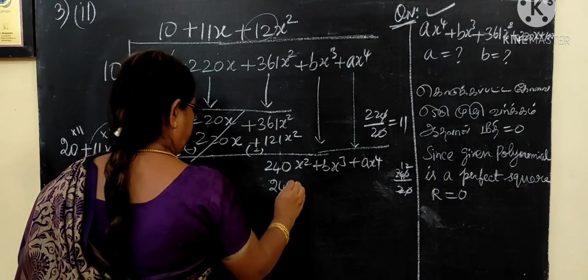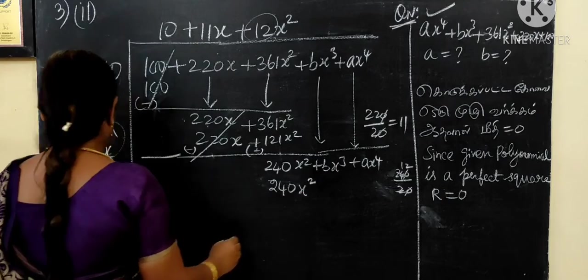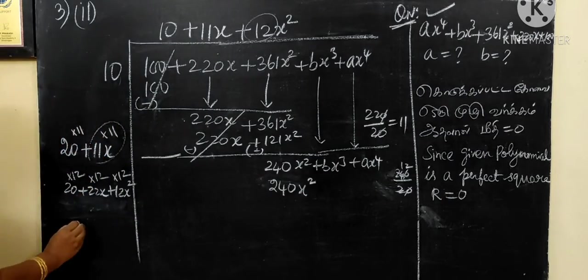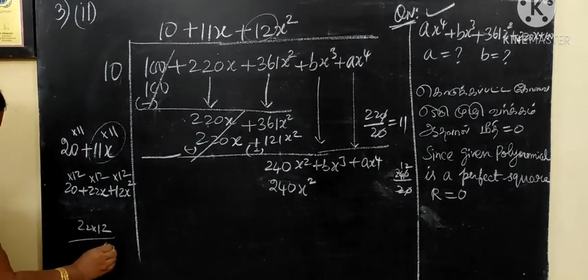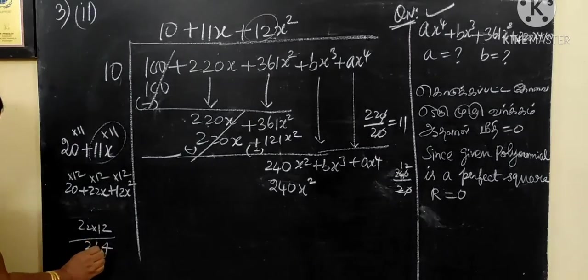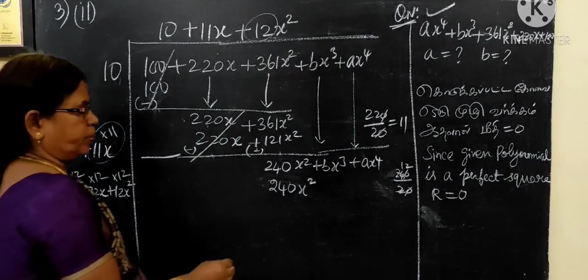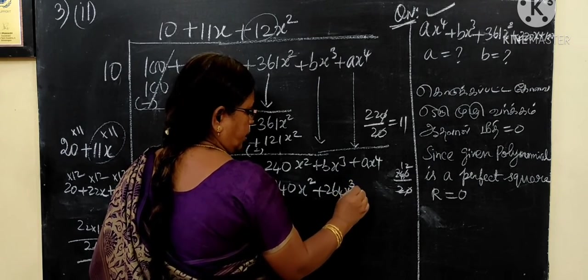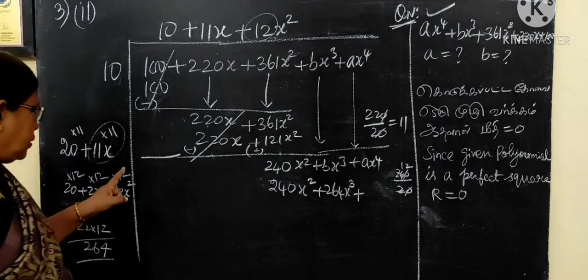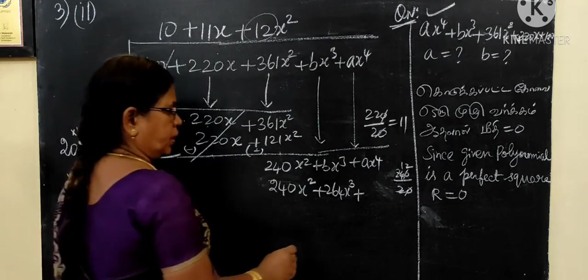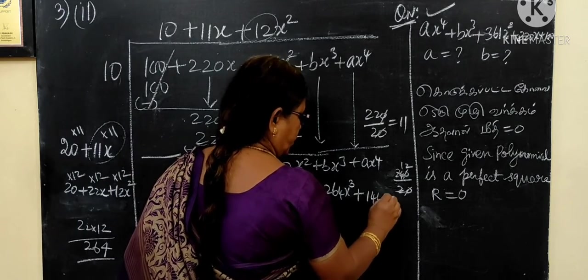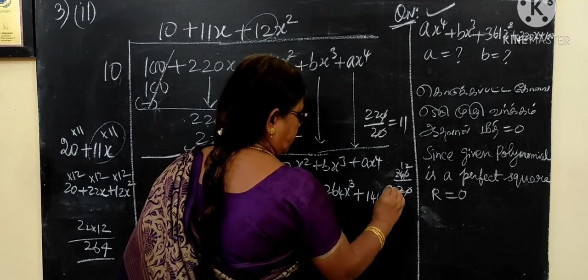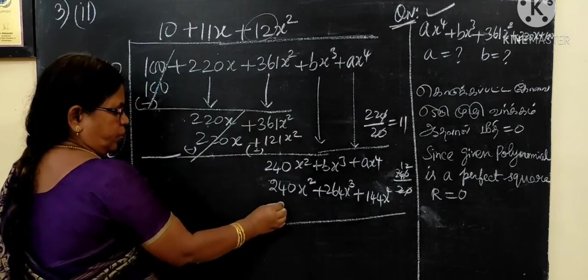So, 240 x squared. So, 22, 18, 1, 2, 2, 4. 244 x power 4.